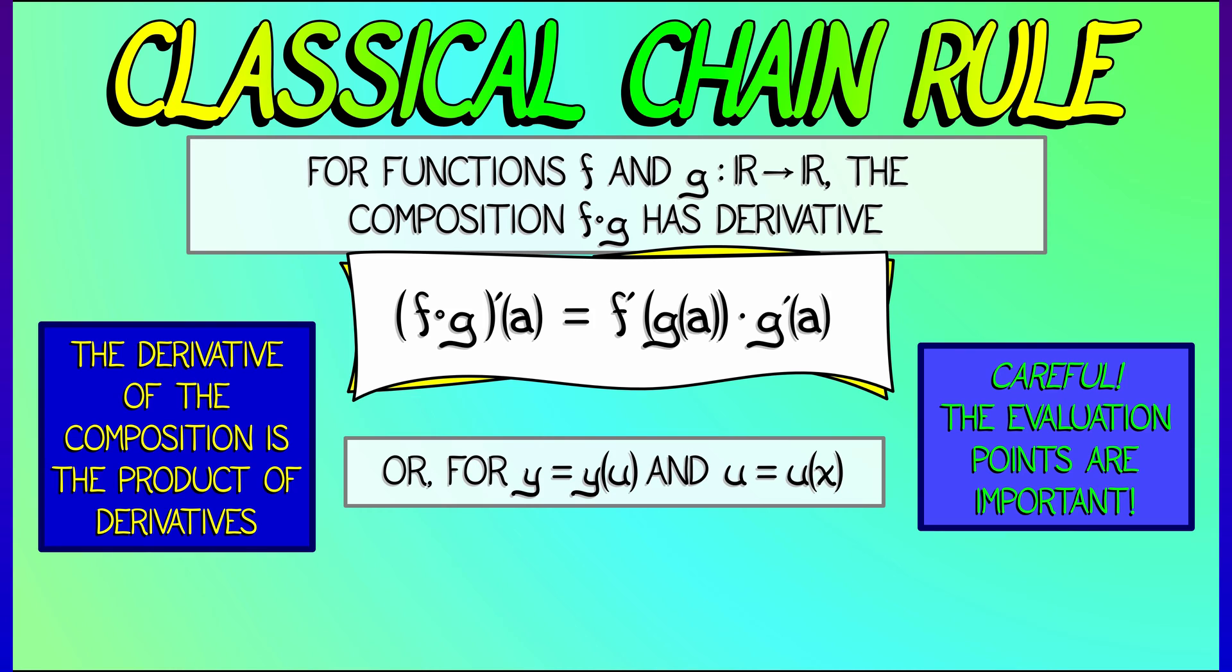Now, another way to write it is let's say you've got y that depends on u, but u depends on x. If you want to know how y depends on x, that is the derivative of y with respect to x, then what you do is you take the derivative of y with respect to u and multiply that by the derivative of u with respect to x.